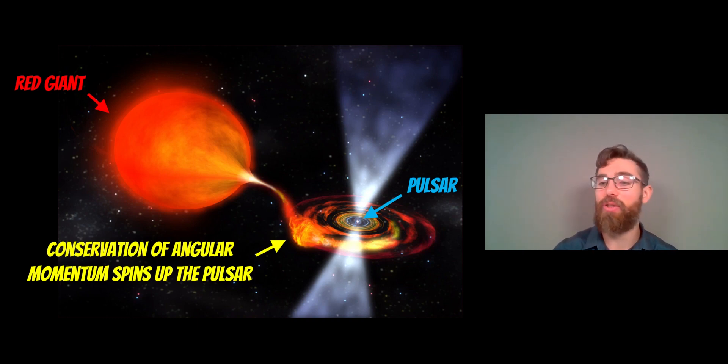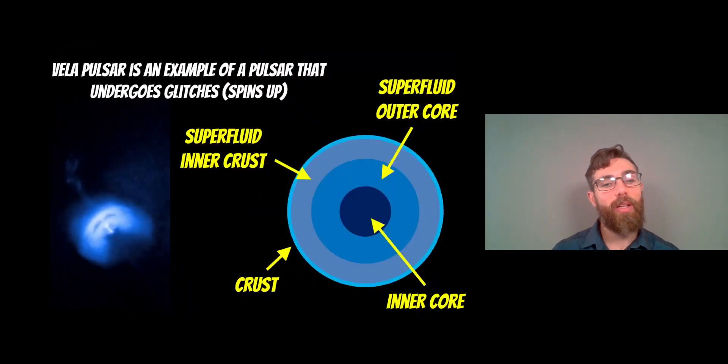The Vela pulsar is an example of one that undergoes glitches. This is kind of like smaller periodic sudden spin-ups in its rotation rate. It has a sudden increase in its spin rate which then decays again, and this is a slightly different process.